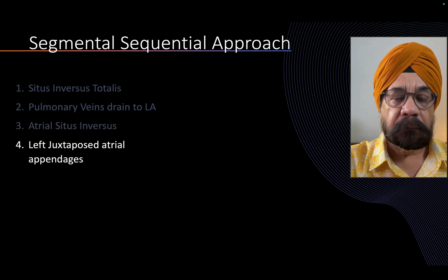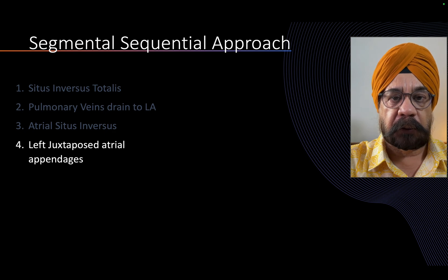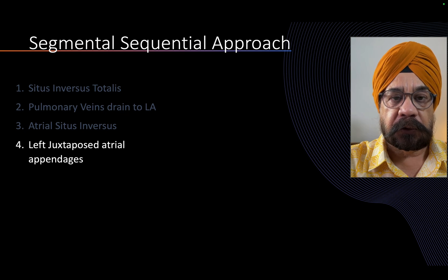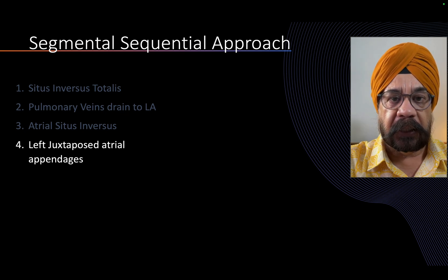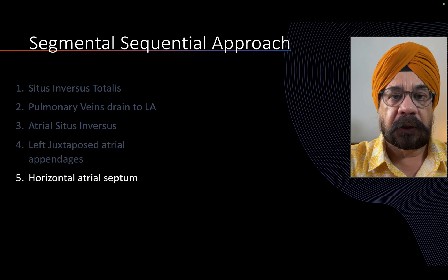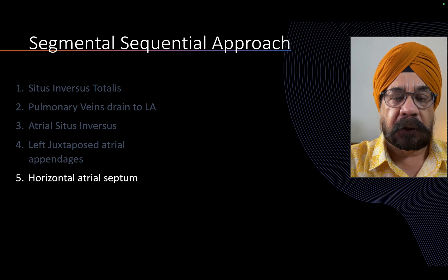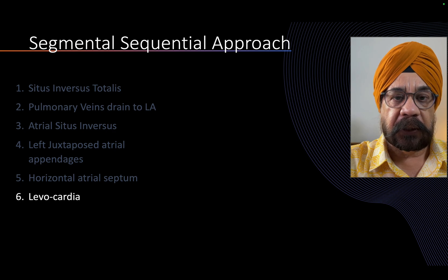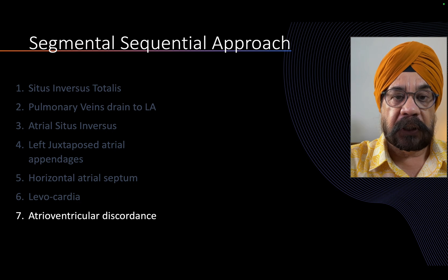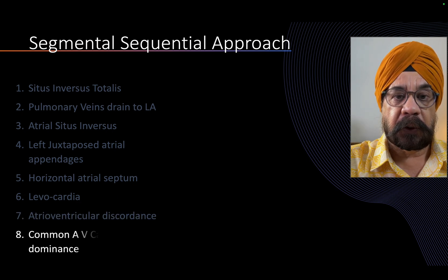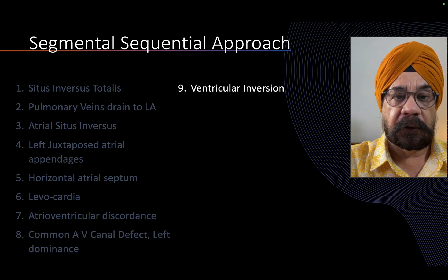We found juxtaposed atrial appendages, and a horizontal atrial septum, which is part and parcel of juxtaposed atrial appendages. Because there was situs inversus, the stomach was on the right side. There was levocardia. There was atrioventricular discordance, because this patient had a common AV canal defect and had a ventricular inversion — something you get in congenitally corrected transposition of the great arteries.